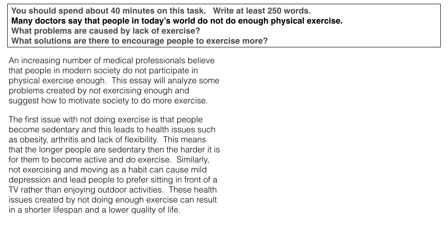Similarly, my second problem: 'Not exercising and moving as a habit can cause mild depression.' So the second problem is depression or sadness. 'These health issues created by not doing enough exercise can result in a shorter lifespan and lower quality of life.' That's the result. So I've got a topic sentence with examples, explanations and more details, and a result at the end — a variety of information. You don't want to just list five problems in five sentences with no examples, no reasons, no explanations, no results. This is not a competition of how many problems you can say. You want to explain your problems and explain your ideas.